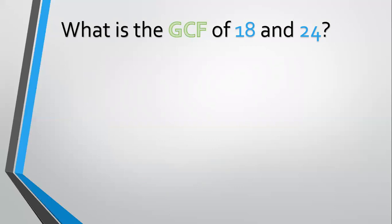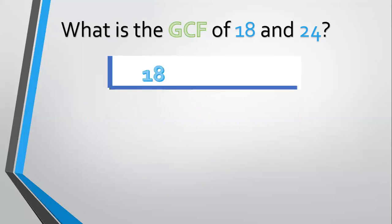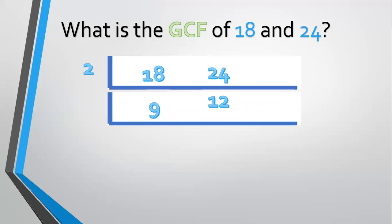Another example — how about 18 and 24? List them: 18 and 24. Since both are even numbers, we divide automatically by 2. 18 divided by 2 equals 9. 24 divided by 2 equals 12. Next, the common factor is 3. 9 divided by 3 equals 3. 12 divided by 3 equals 4. There's nothing left to divide, so we multiply: 2 times 3 equals 6. The GCF of 18 and 24 is 6.